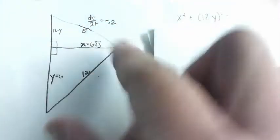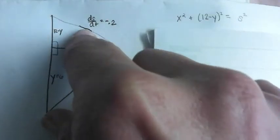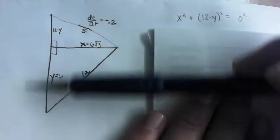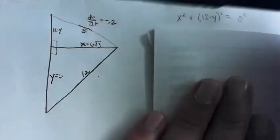But right now when this is 6, this is 6 root 3. This is changing. Obviously as this post moves upward, this is lengthening. And when this one lengthens, this one's shortening.